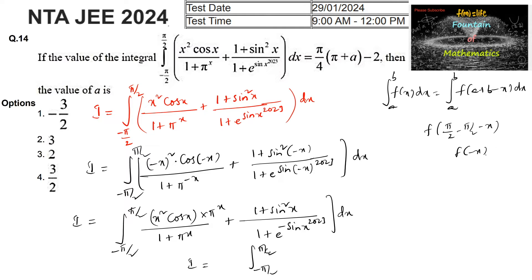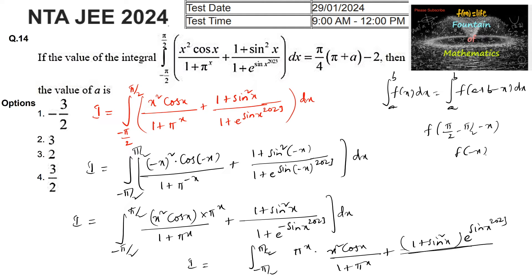So I equals ∫_{−π/2}^{+π/2} [πˣ · x² cos x / (1 + πˣ)] + [(e^(sinx)^2023 · (1 + sin²x)) / (1 + e^(sinx)^2023)] dx. Taking LCM, call this equation (1) and the previous one equation (2), and then add (1) and (2).